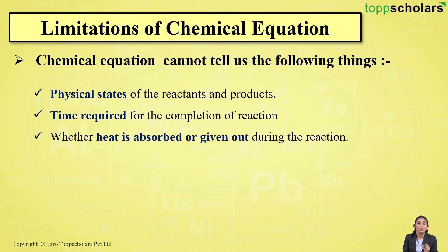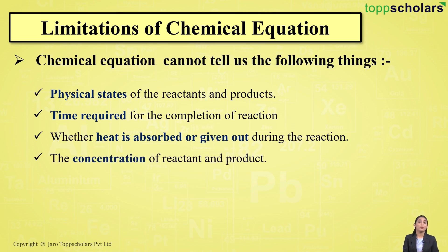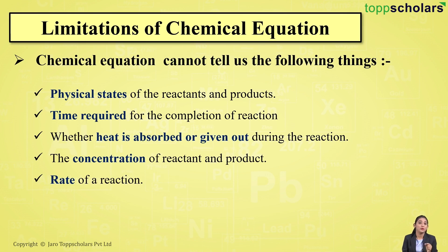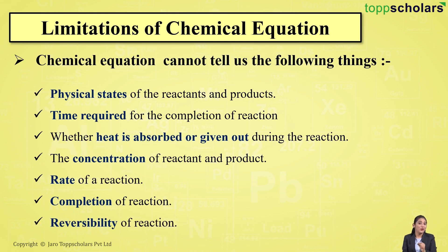The chemical equation also does not give information about the exchange of energy — whether heat is absorbed or liberated is not indicated. It does not provide information about the concentration of reactants and products, nor about the rate of the reaction. It also does not indicate the completion of a reaction, or whether the reaction is reversible or irreversible.